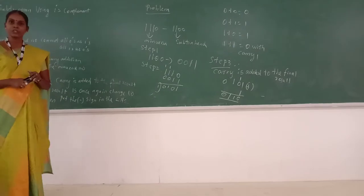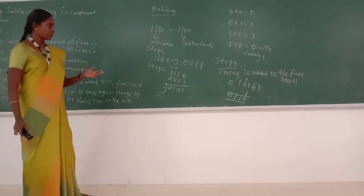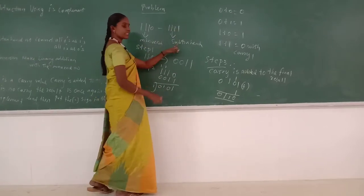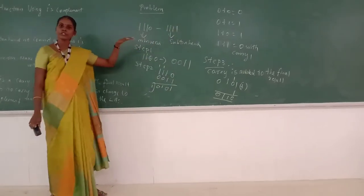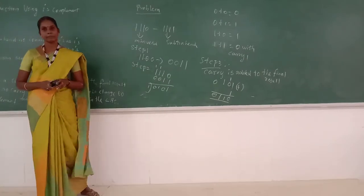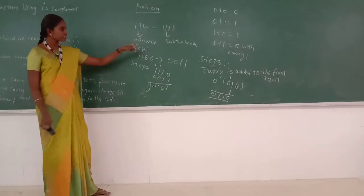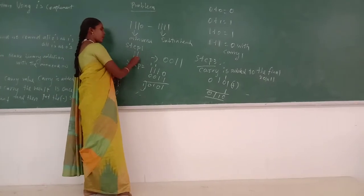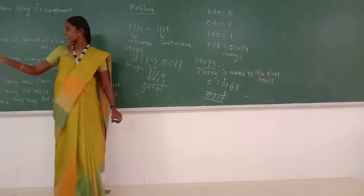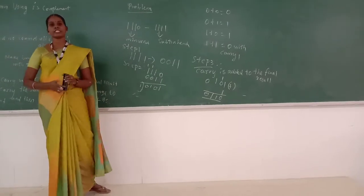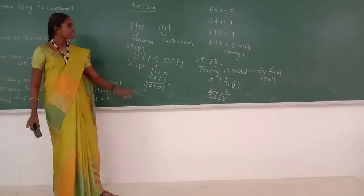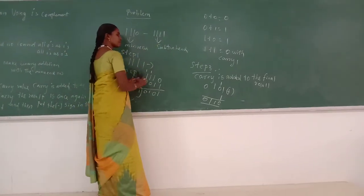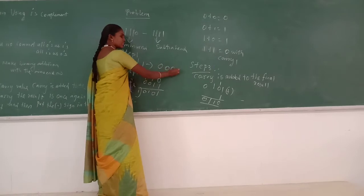Now I am going to do one more problem using the one's complement method. Take the subtrahend number. The subtrahend number here is 1 1 1. Step 1: Convert all zeros as ones and all ones as zeros as usual. Since the number is all ones, the answer in step 1 is 0 0 0.